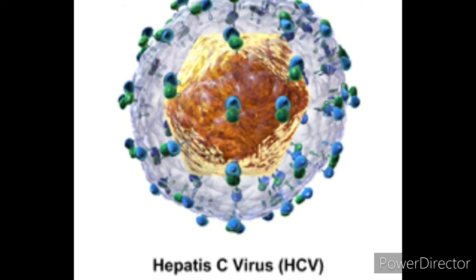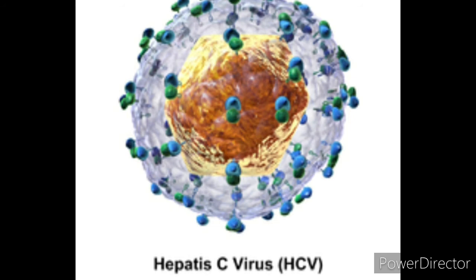Materials needed to perform the rapid card test include the HCV device kit, a sample dropper or micropipette, buffer, and a patient sample. The sample can be collected in an EDTA vial, sodium citrate vial, or heparin vial.